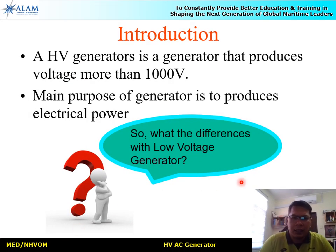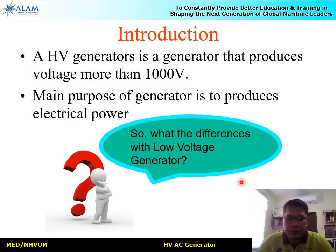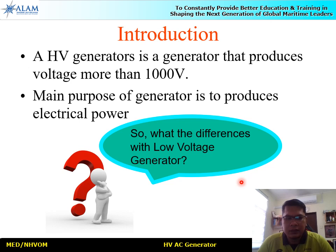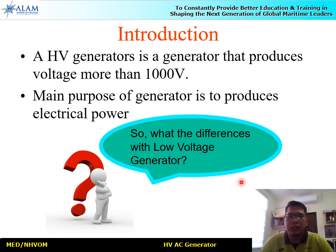A high voltage generator is a generator that produces voltages more than 1000 volts. From our earlier topic on the definition of high voltage on board ships, high voltage is where voltage is more than 1000 volts and generated and distributed at high voltage. Alternatively, you can have a low voltage generator that is transformed up and then distributed at high voltage.